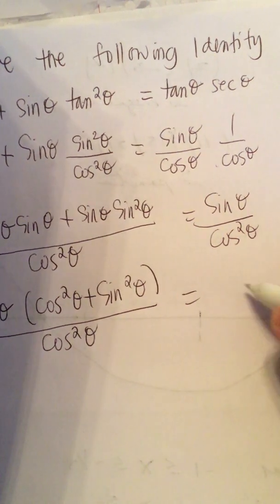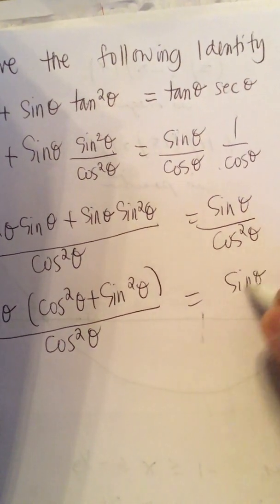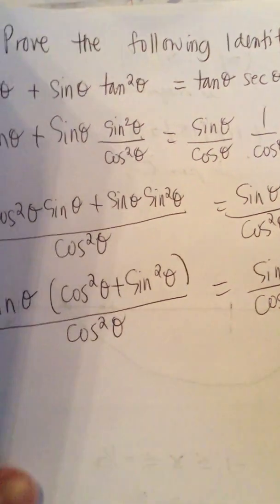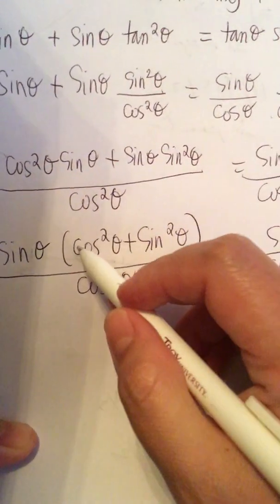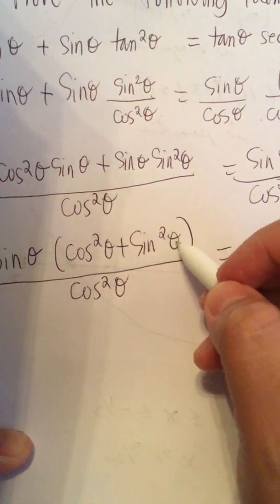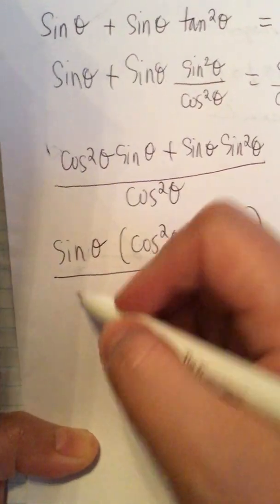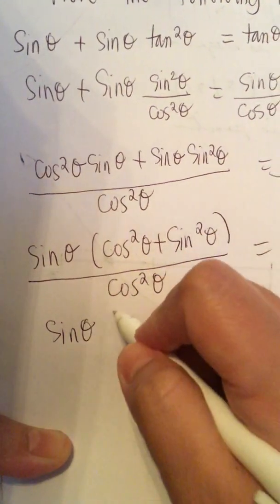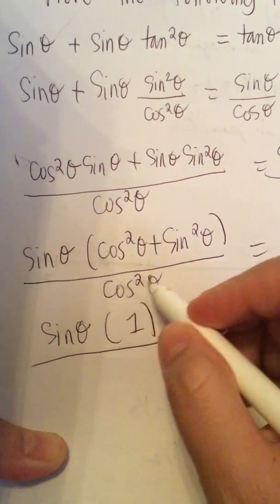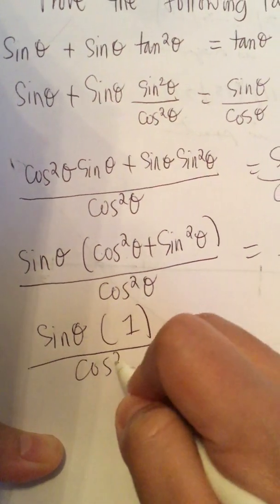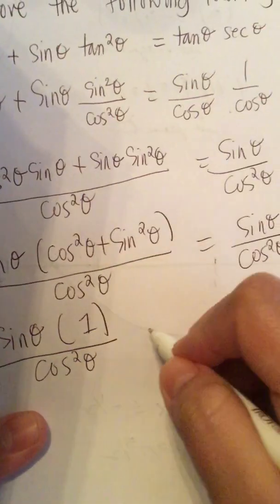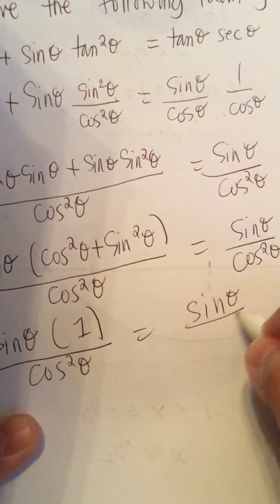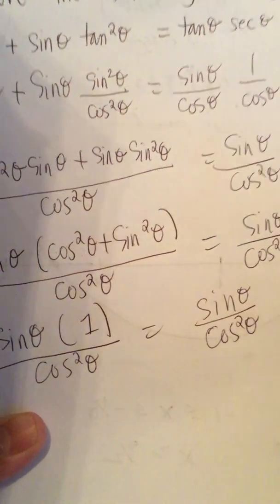This equals sine theta over cosine squared theta. Now, cosine squared theta plus sine squared theta equals 1, so we get sine theta times 1 over cosine squared theta, which equals sine theta over cosine squared theta. The identity is proven.